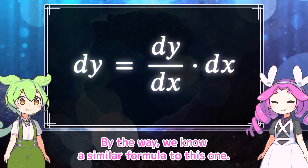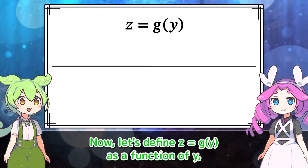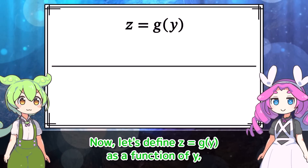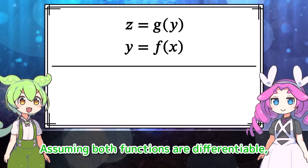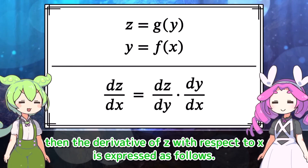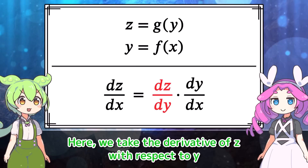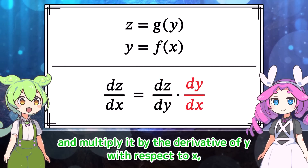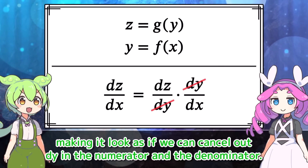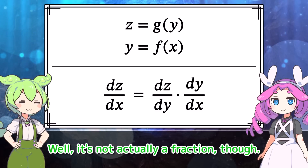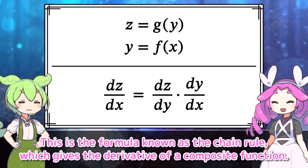By the way, we know a similar formula to this one. Do you remember it? I have definitely seen a similar formula before. Let's define z equals g of y as a function of y, and y equals f of x as a function of x. Assuming both functions are differentiable, the derivative of z with respect to x is expressed as follows — we take the derivative of z with respect to y and multiply it by the derivative of y with respect to x, making it look as if we can cancel out dy in the numerator and the denominator. It's not actually a fraction, though. This is the formula known as the chain rule, which gives the derivative of a composite function.